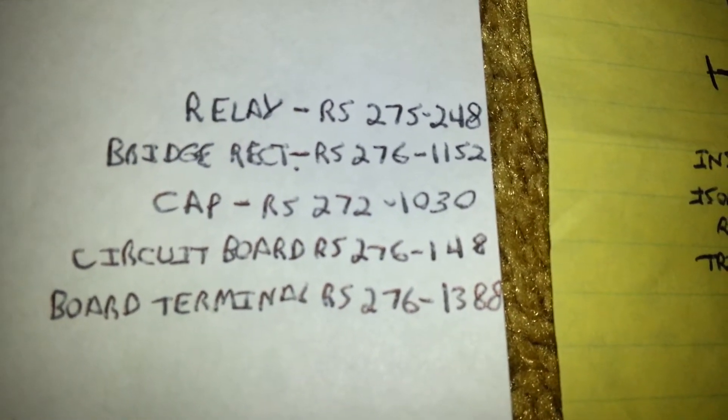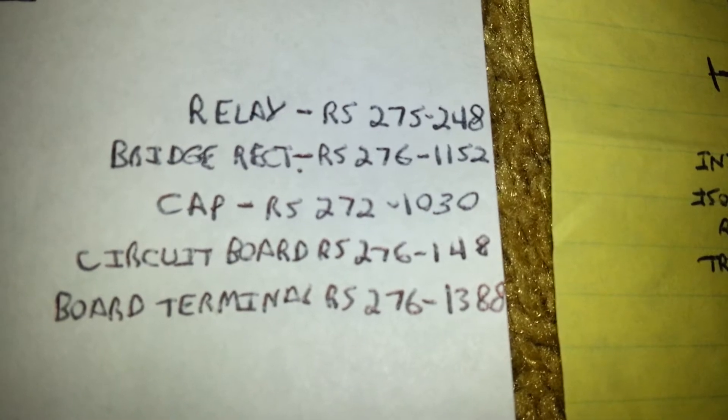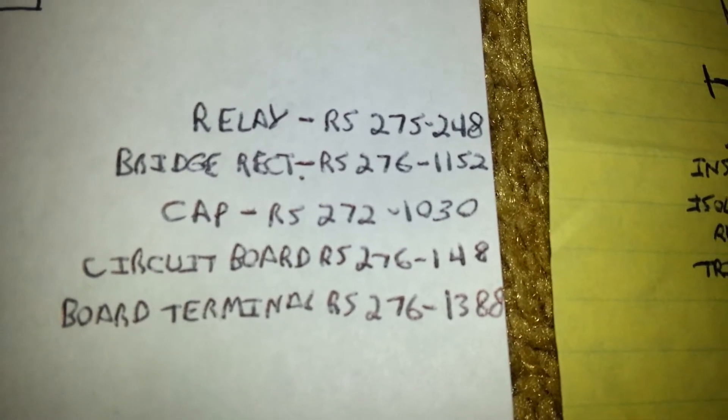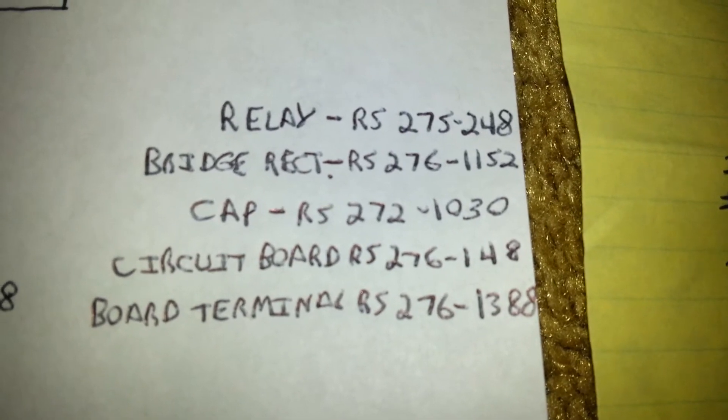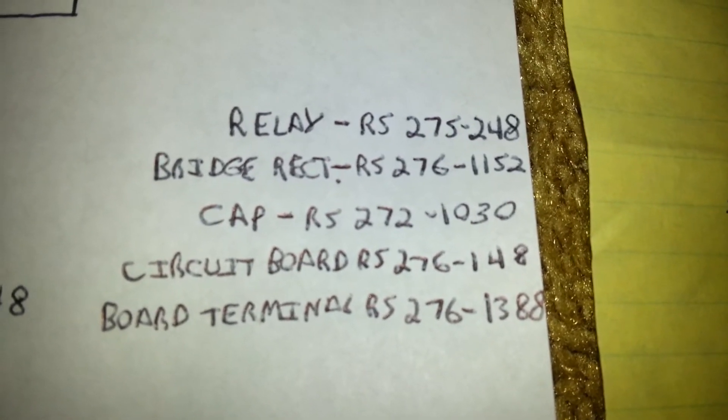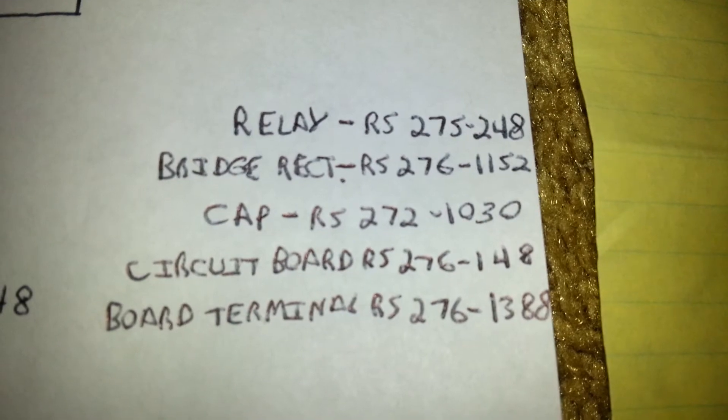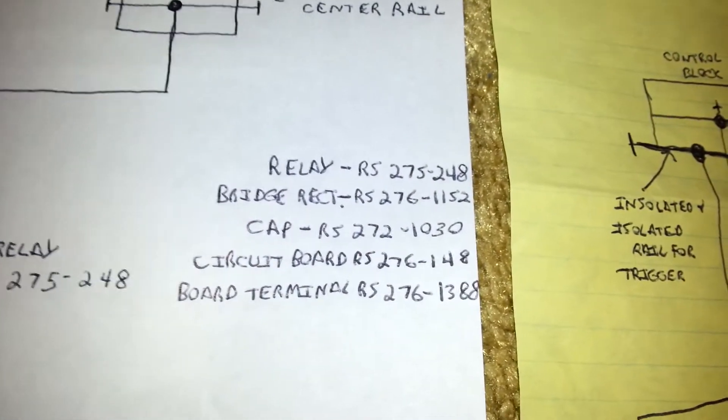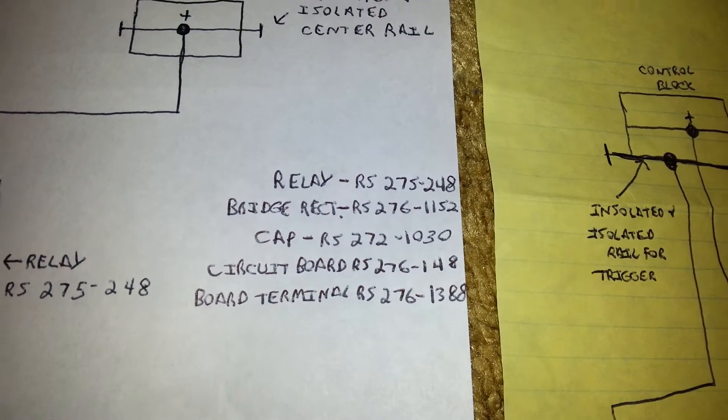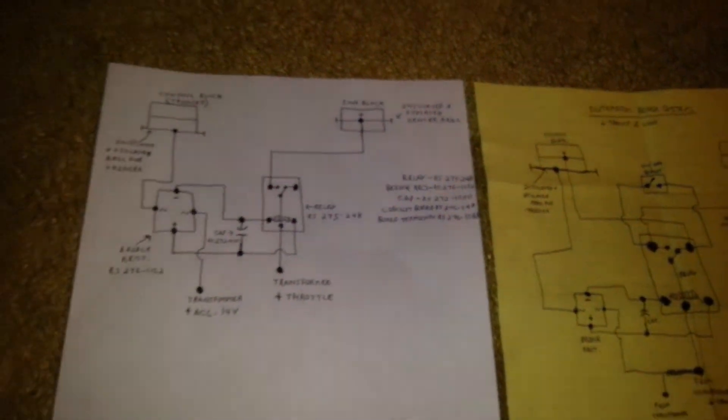Hopefully you can read my handwriting. The relay, the bridge rectifier, the capacitor, the circuit board, and the board terminal. And again, that board terminal is the blue terminal on the circuit board that the wires plug into. That's everything you need. It's very inexpensive. I believe it was well under $20 for that whole circuit, maybe around $10 or $15. The relay was the most expensive thing.